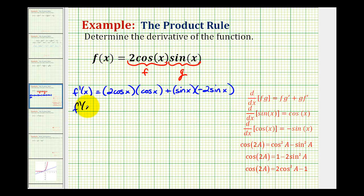So we have f'(x) equals 2cos²x. This is going to be minus 2sin²x.